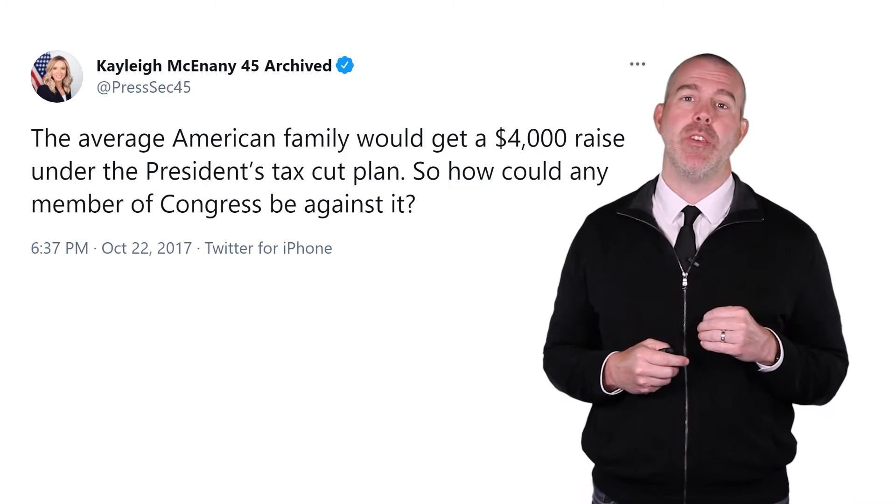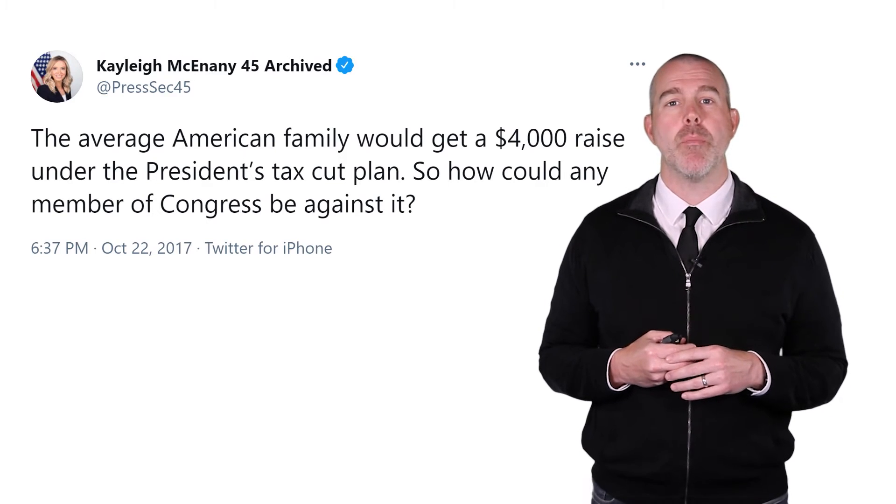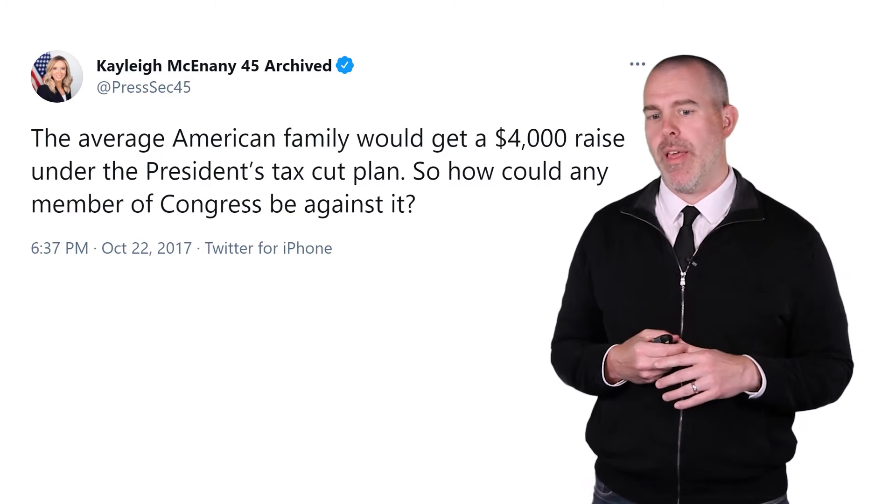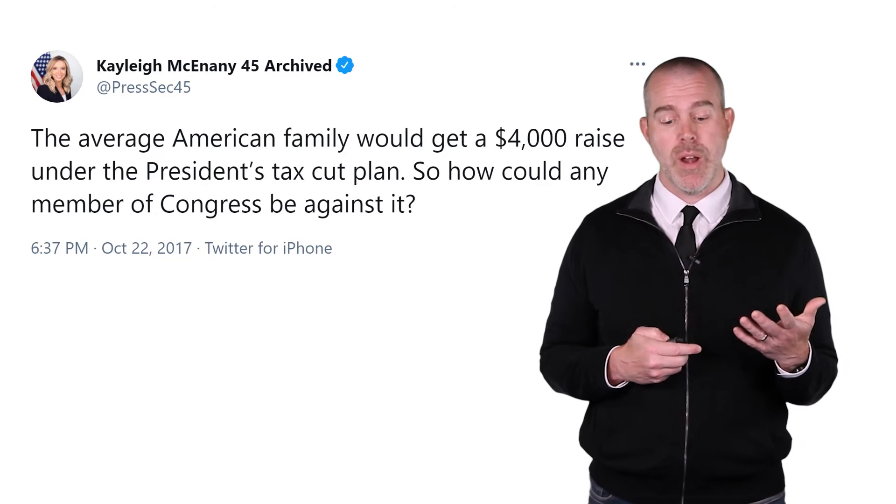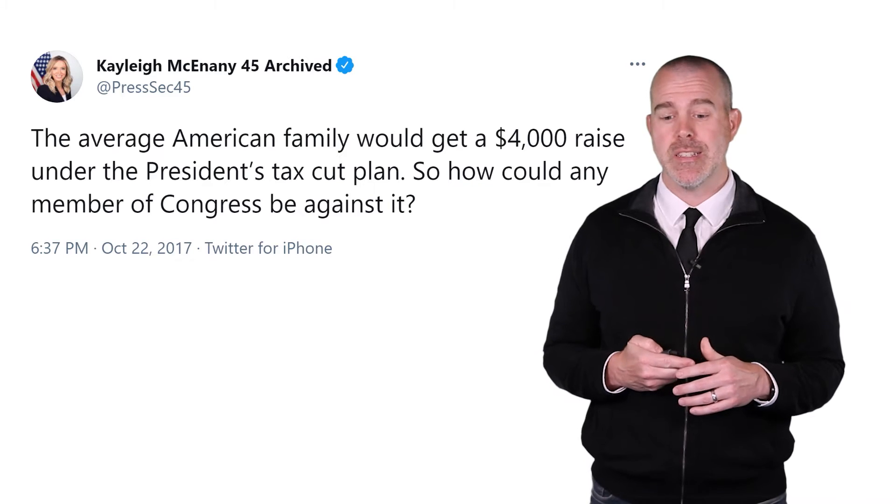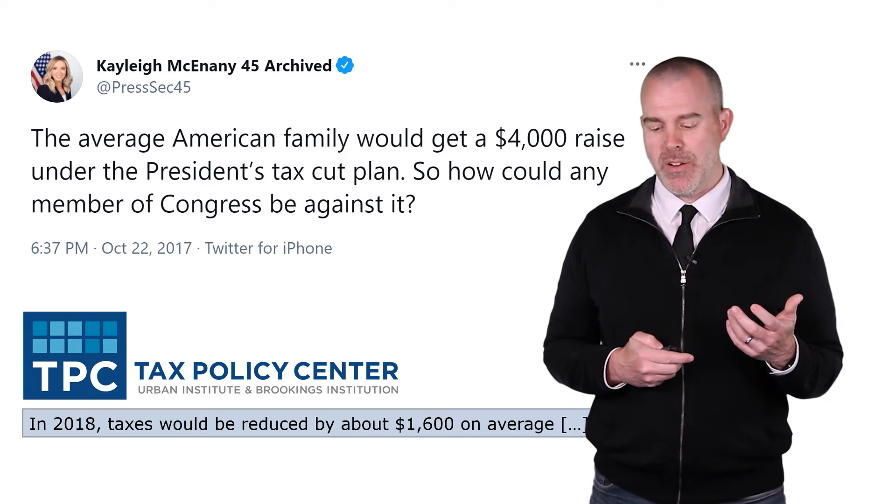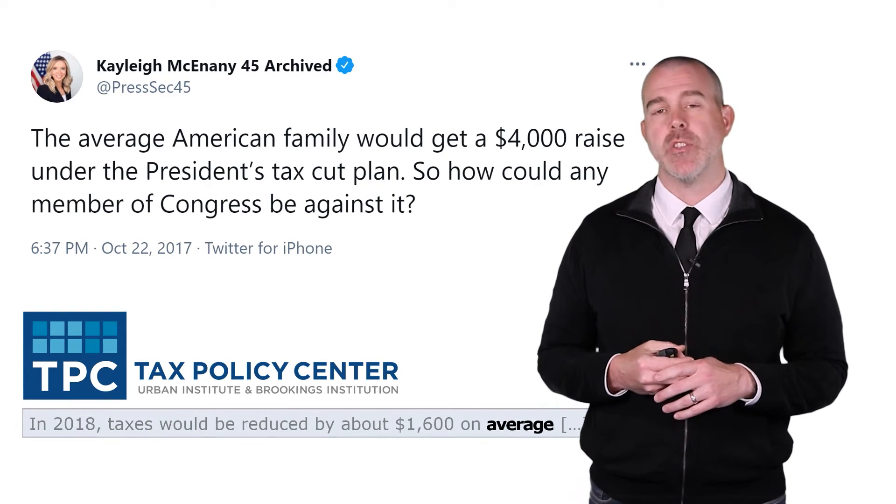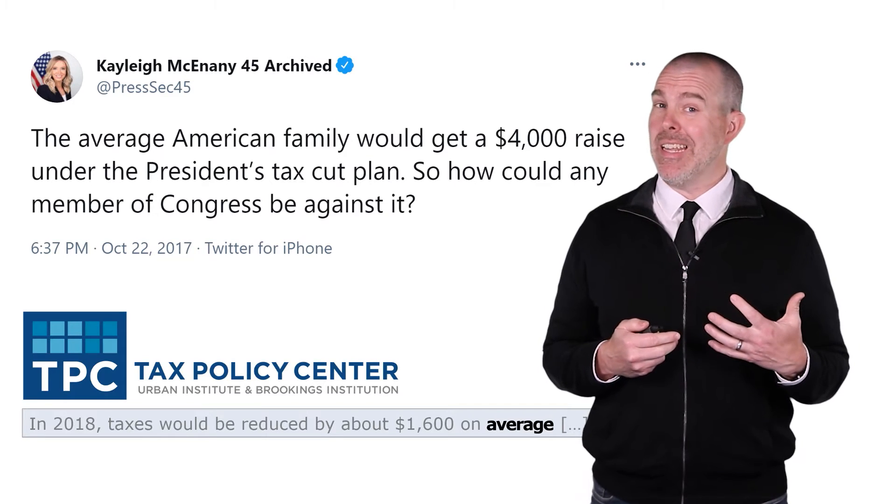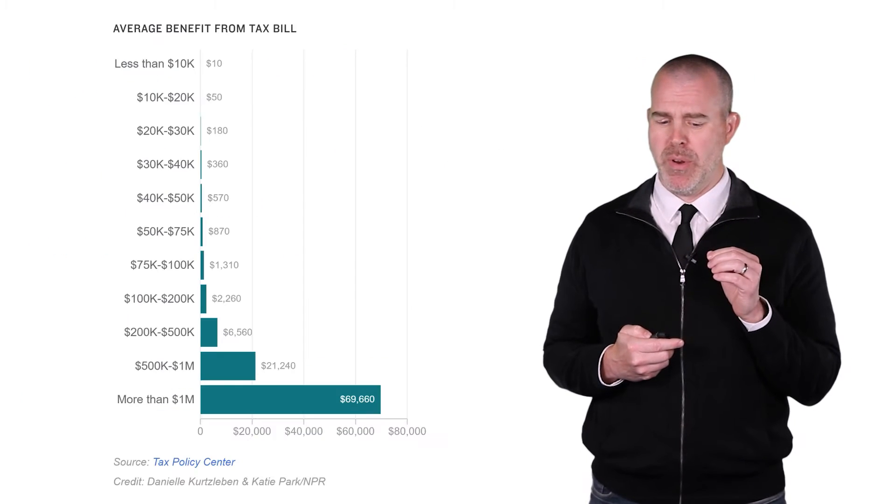Here's an example of how this can be used. Here's a press release from the press secretary for President Trump. There was a tax cut plan, and she tweeted out that the average American family would get a $4,000 raise under the president's tax cut. So they would pay $4,000 less in taxes. The Tax Policy Center from the Urban Institute and Brookings Institution found that in 2018 taxes would be reduced by about $1,600 on average. But taxes are based on income, and income is very skewed.